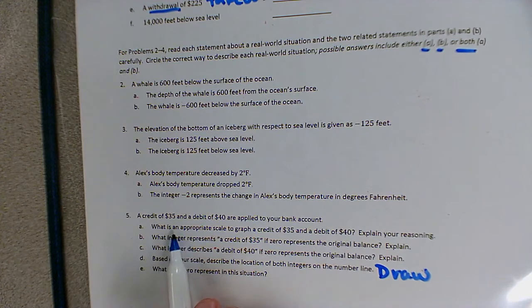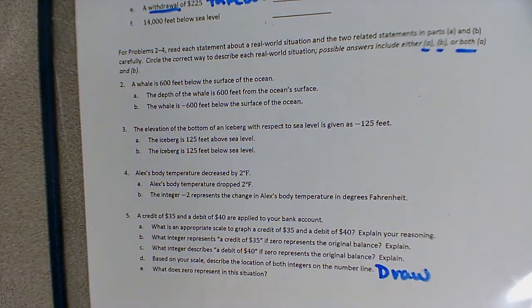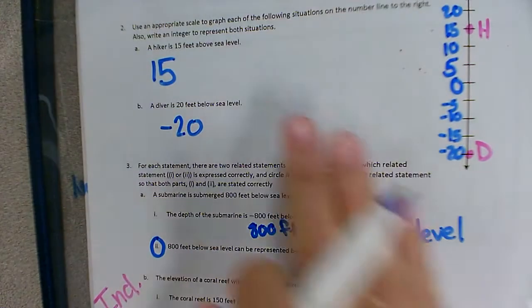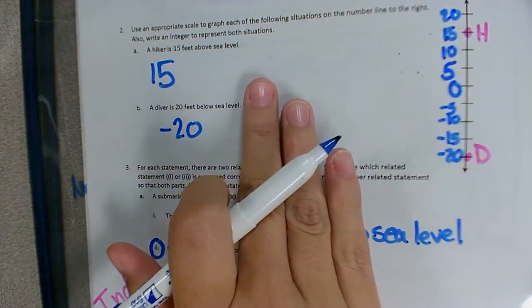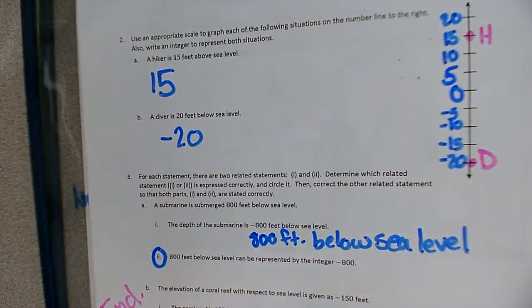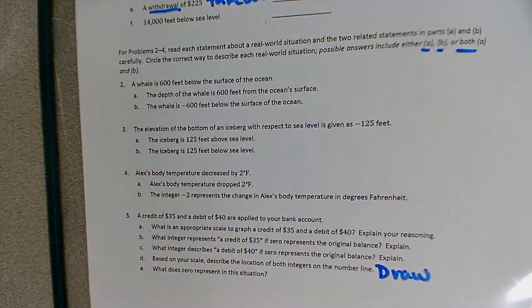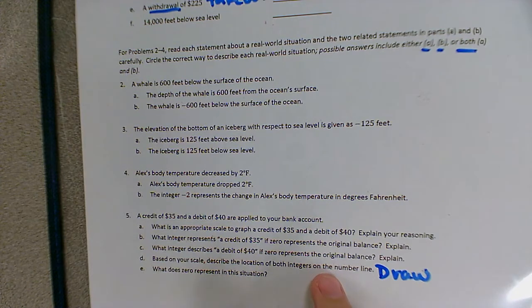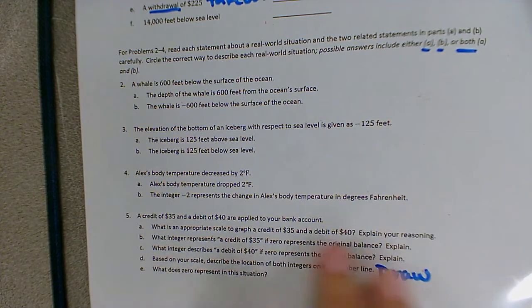So for part A, when it's asking what is an appropriate scale to graph a credit of 35 and a debit of 40, think about that previous page that we talked about with our hiker and our diver and how we didn't go by ones, we counted by fives. So think about what would be the best way to scale your graph or your number line to show these two integers.